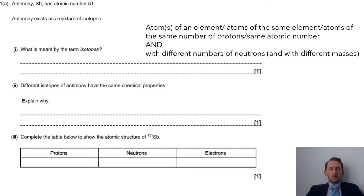So an isotope means we have the same element or same number of protons, but has a different number of neutrons. So a nice, easy definition, hopefully no problems there.